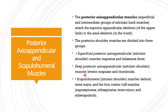The posterior axio-appendicular muscles include three types. Two groups are extrinsic shoulder muscles: superficial posterior axio-appendicular muscles and deep posterior axio-appendicular muscles. The third group is intrinsic shoulder muscles, also named scapulohumeral muscles. In the extrinsic group, two muscles are superficial and two are deep.